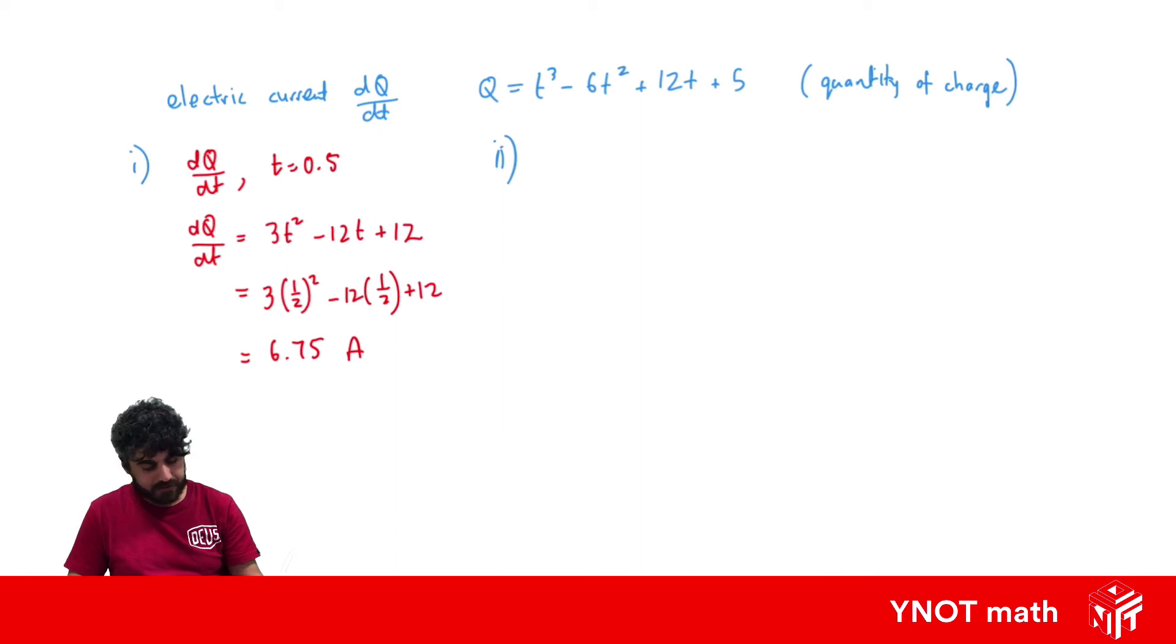For our second part, we're after the initial charge. So charge is measured by Q. So that means we're after Q, and initial means that's when t equals 0. So what we have to do is just find Q when t is 0. So we're going to have 0³ minus 6 times 0² plus 12 times 0 plus 5. And that's just going to give us Q is equal to 5. And this will be measured with a capital C for charge.